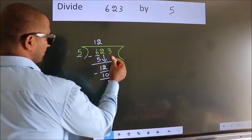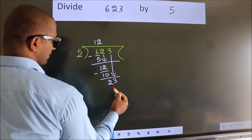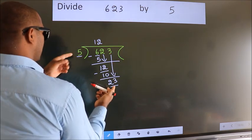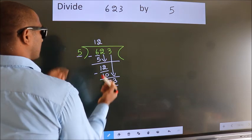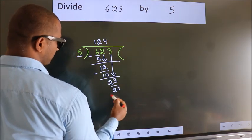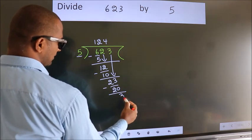After this, bring down the next number. So 3 down. So 23. A number close to 23 in 5 table is 5 fours 20. Now we subtract. We get 3.